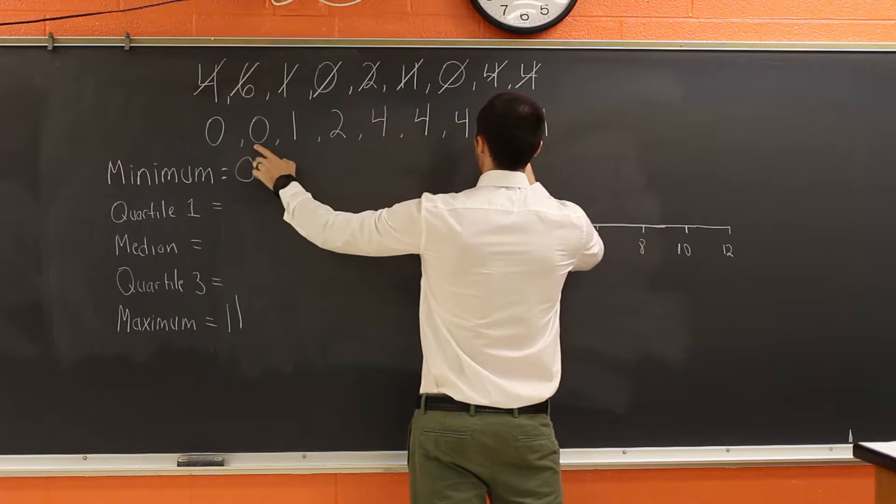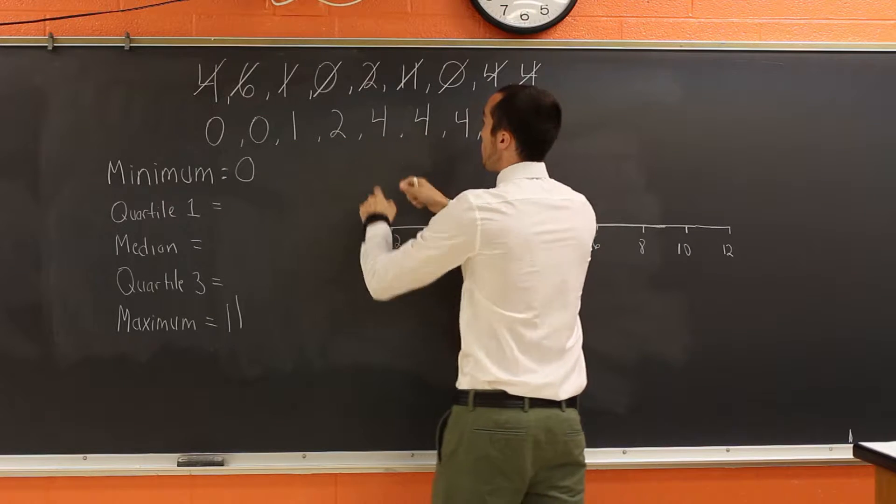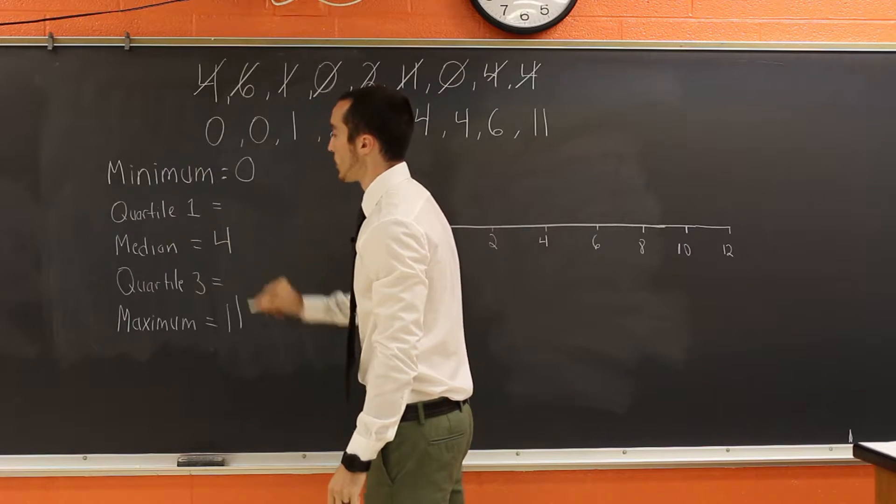So we're at zero and 11, zero and six, one and four, two and four. Here is our middle number. So our middle number or our median is going to be four.